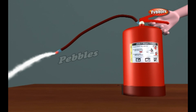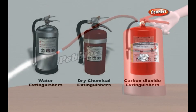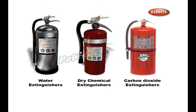The proper way to use the extinguisher is to aim it directly at the fuel, rather than the flames themselves, and move the stream with a sweeping motion.